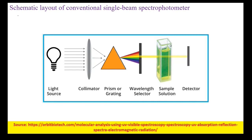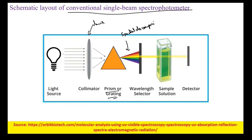The schematic layout of a conventional single-beam spectrophotometer has a light source; the radiation falls on a collimator lens which condenses the light over a prism or grating for spectral decomposition. After the spectral decomposition, there is a slit which acts as the wavelength selector. That specific wavelength of light passes through the sample and then reaches the detector. This is how a single-beam transmission spectrophotometer works.